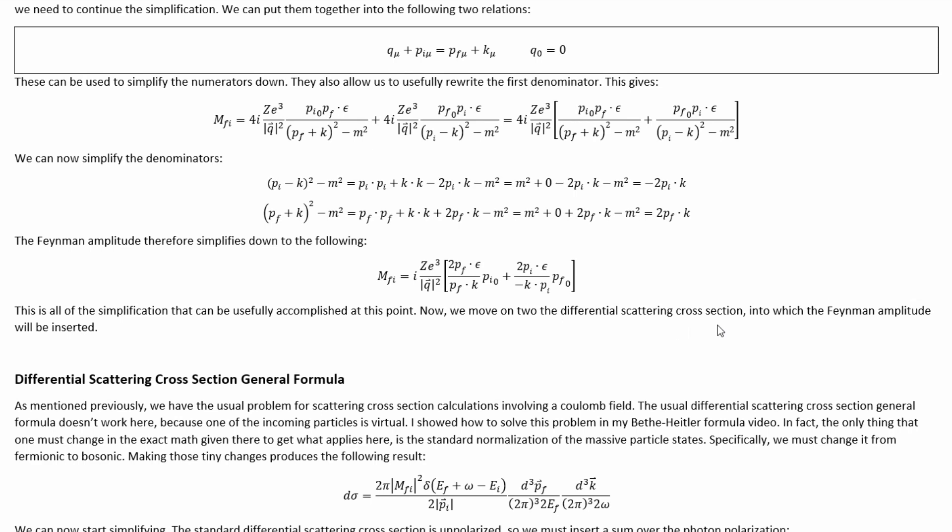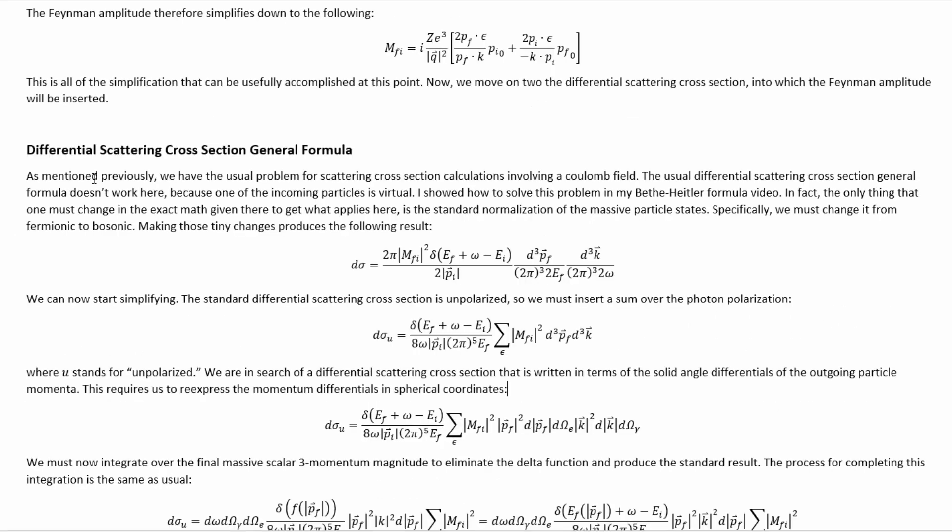Now we move on to the differential scattering cross-section into which the Feynman amplitude must be inserted. As was mentioned previously, we have the usual problem for scattering cross-section calculations involving a Coulomb field. The usual differential scattering cross-section general formula doesn't work here because one of the incoming particles is virtual. I showed how to solve this problem in my beta-Heitler formula video. In fact, the only thing that one must change in the exact math given there to get what applies here is the standard normalization of the massive particle states.